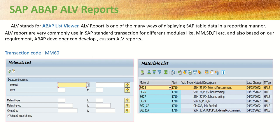ALV reports are very commonly used in SAP standard transaction codes for different modules like MM, SD, FI, and other modules as well. And based on our own requirements, we can also develop a custom ALV report if our required data is not available in any of the standard reports. This is a screenshot of a SAP standard ALV report.